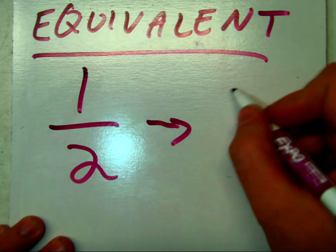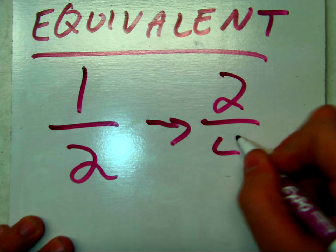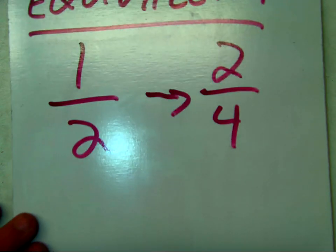One half is equivalent to many things. One of the things it's equivalent to is two-fourths. Now, why is that? I can unpack that.